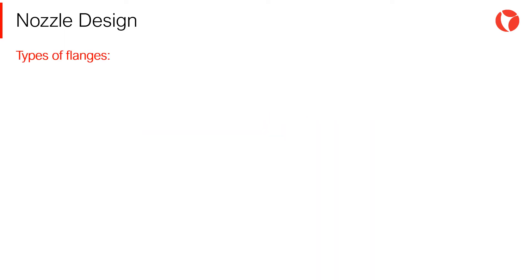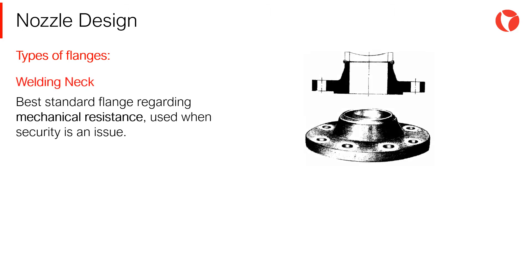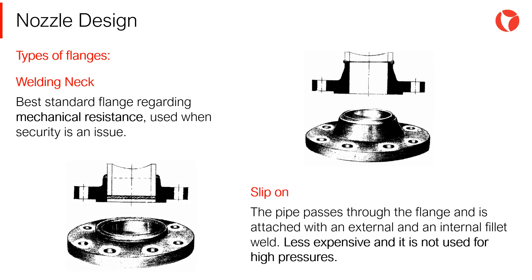Some of the flange types most used in pressure vessels are: welding neck flange, butt-welded to the pipe — the best standard flange regarding mechanical resistance, used when security is an issue. Slip-on flange: the pipe passes through the flange and is attached with an external and internal fillet weld. This type is less expensive than the previous and is not used for high pressures.